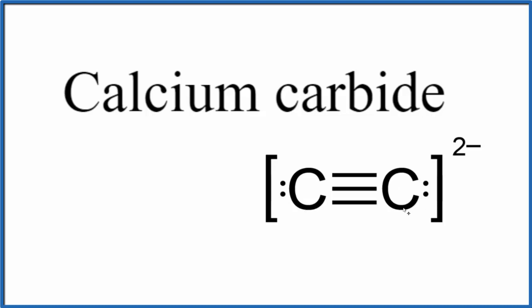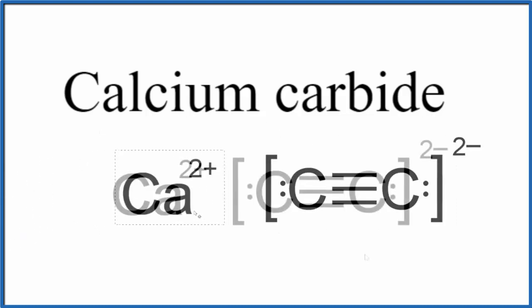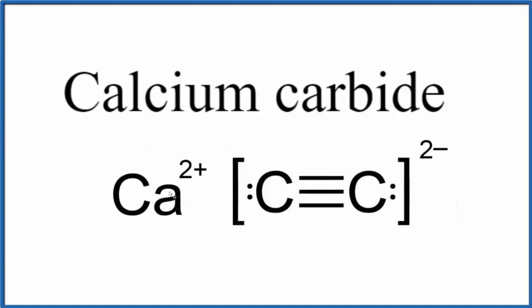So we have these two carbons here and then calcium, that's in group two on the periodic table. You can see the two plus on the calcium that balances out this two minus here on the carbide ion. Net charge is zero.